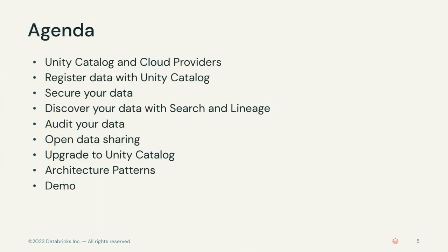From an agenda perspective, we're going to start by talking about Unity Catalog and how it relates to cloud providers like AWS, Azure, and GCP — the constructs that exist and how they correlate to your cloud constructs. We'll then talk about registering data with Unity Catalog: database sources, query federation, and file sources. We'll cover securing your data, discovering data with search and lineage, auditing including billing tables and user access, open data sharing powered by Delta Sharing, the upgrade process, architecture patterns, a demo from Ify, and a surprise guest at the end.